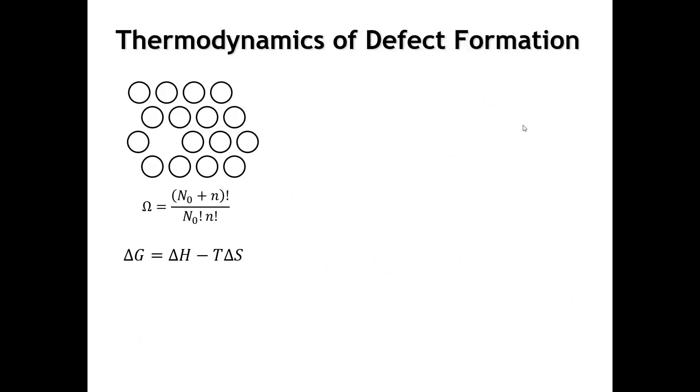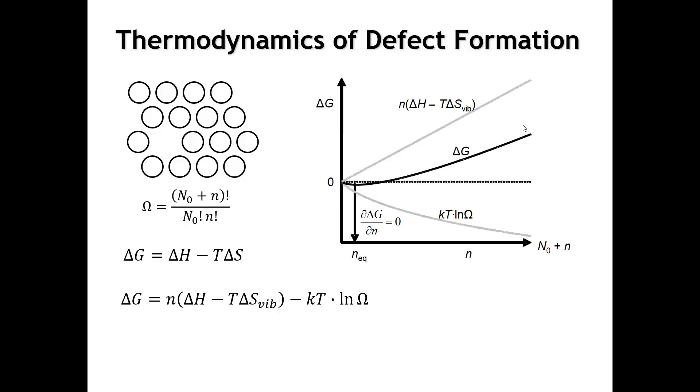Well, the change in the free energy of the crystal that happens when we move that atom from the bulk to the surface is the change in enthalpy minus the temperature times the change in entropy. Now, the entropy term has two components. There's a certain amount of the entropy that comes from the vibrations of the atoms. And that will be slightly different if the atom is at the surface than it would be if it were in the bulk. And then we have this kT times the natural log of omega. That's our configurational entropy term.